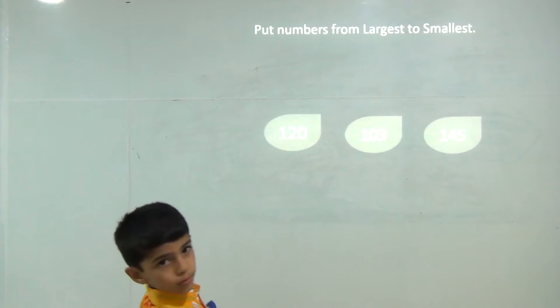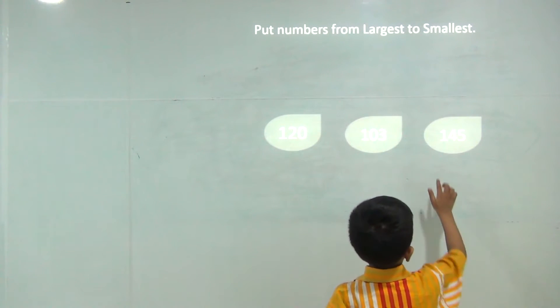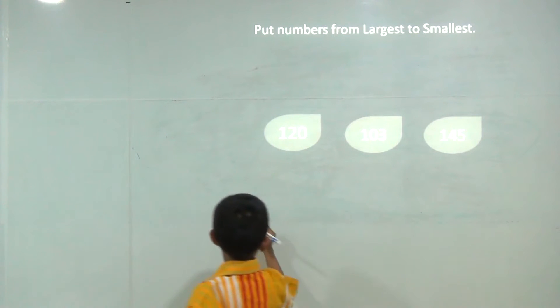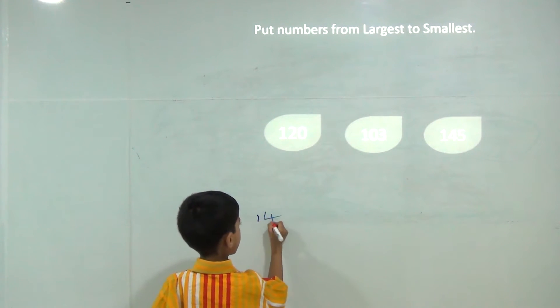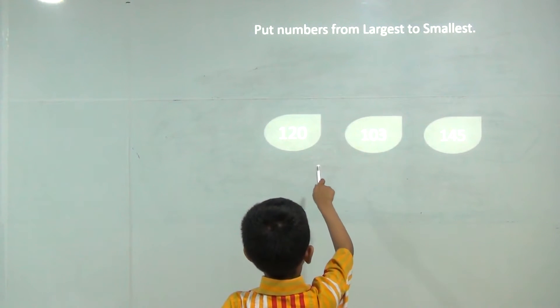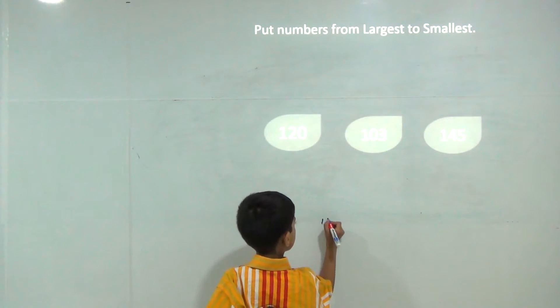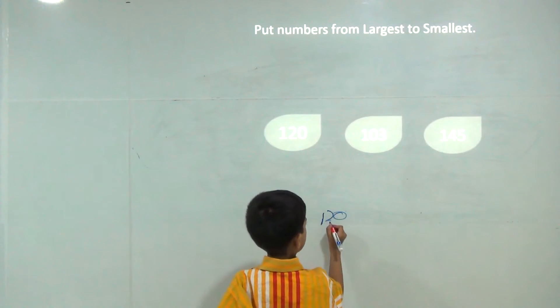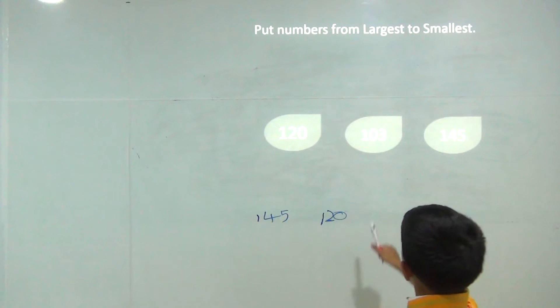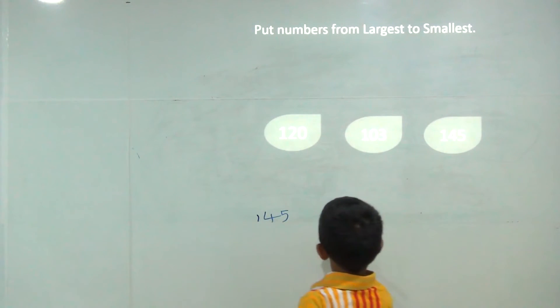Now, largest to smallest. The largest is 145, 120 is smaller than 145, and 193 is smaller than 120.